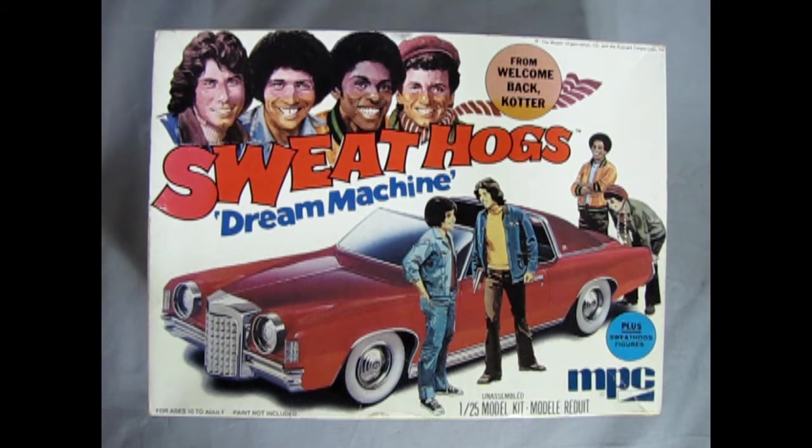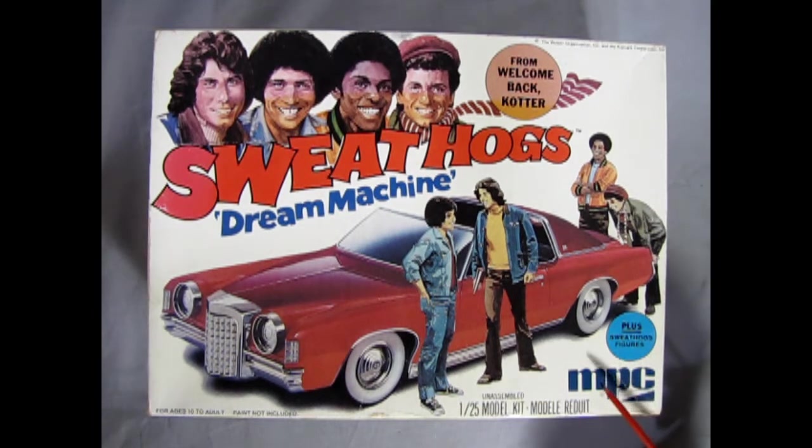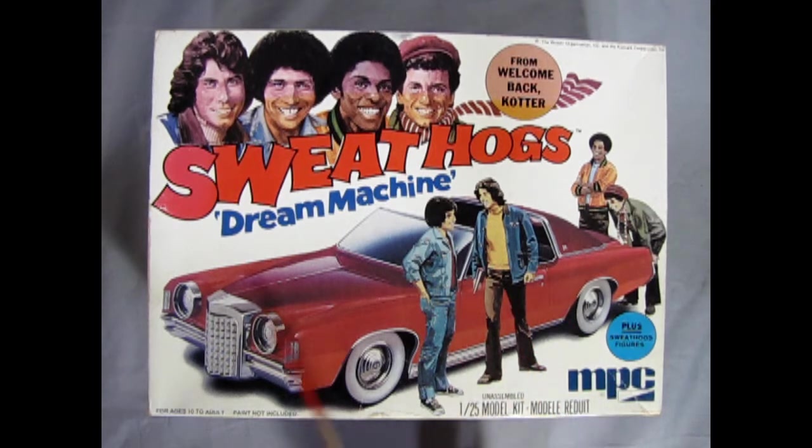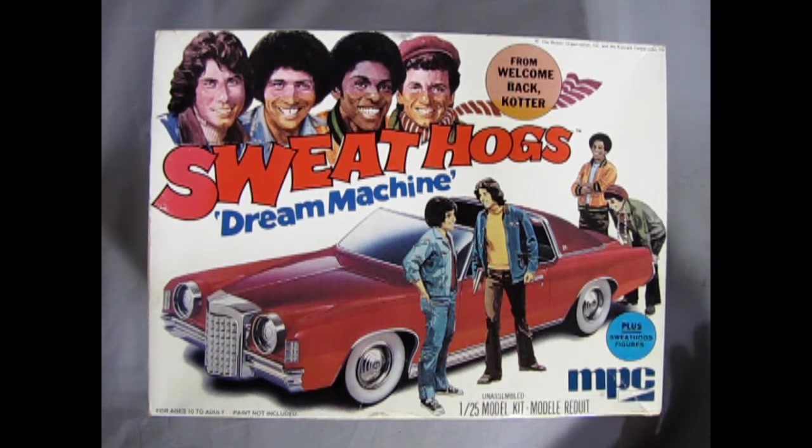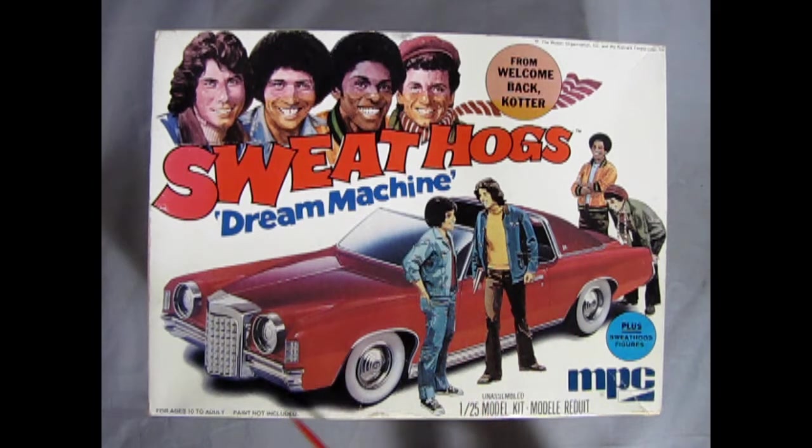Now last time we looked at a Dream Machine it was Fonzie's Dream Rod and there is one thing cool about MPC back in the 70s and early 80s is that they seem to have a lot of model kits that were tied into TV shows and this one of course the Sweathogs are from Welcome Back Cotter. Now this model car looks very much like a 1970s Cadillac Eldorado. Of course one that's quite, as we would say now, pimp my ride. This was sort of a popular style back in, I guess was New York or something, where they'd put these big grills on and then extend out these headlights in this really bizarre fashion.